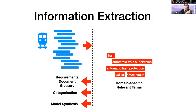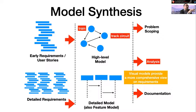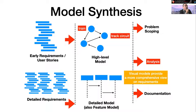Information extraction can be used in its basic form for constructing glossaries, but also to support categorization and model synthesis — identifying relevant entities to generate models from requirements. Model synthesis can leverage NLP techniques: you may have early requirements and user stories and want to create a higher-level model for problem scoping by extracting entities and relationships. Or you may have detailed requirements from different documents and want to generate a feature model or sequence diagram.